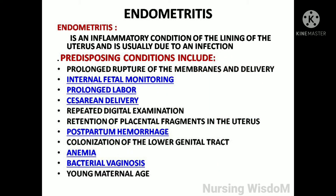Endometritis is an inflammatory condition of the lining of the uterus and is usually due to an infection. Predisposing conditions include prolonged rupture of the membranes and delivery, internal fetal monitoring, prolonged labor, caesarean delivery, repeated digital examination, retention of placental fragments in the uterus, postpartum hemorrhage, colonization of the lower genital tract, anemia, bacterial vaginosis, and advanced maternal age.